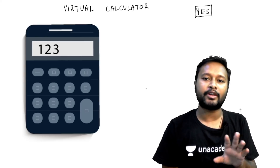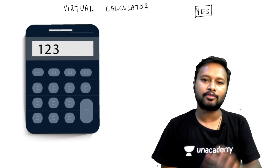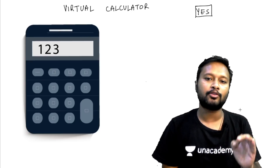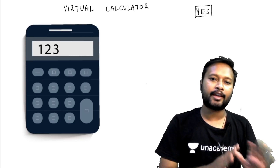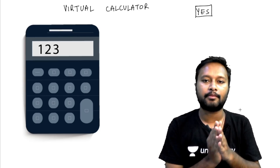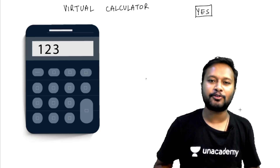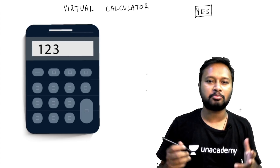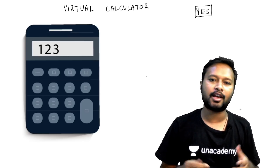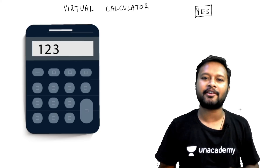These two points — the admit card details and the virtual calculator — I wanted to make very clear because I was getting a lot of questions about them. The virtual calculator was there in physical sciences, but whether it will be in chemical sciences I cannot say for certain, though there are 80% chances it will be. Thank you so much for watching. If you have any questions, ask in the comment section below. Have a great day, bye!